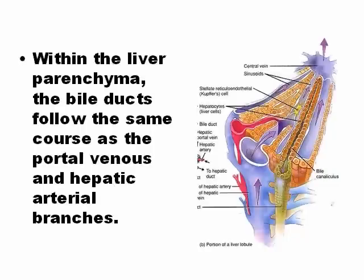The bile ducts follow the same course, but the hepatic veins do not. You can see in the picture the branch of the portal vein in blue, the branch of the hepatic artery in red, and the branch of the bile duct in green.